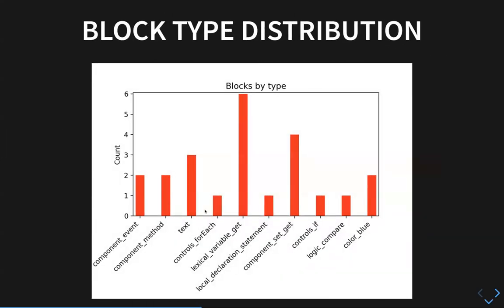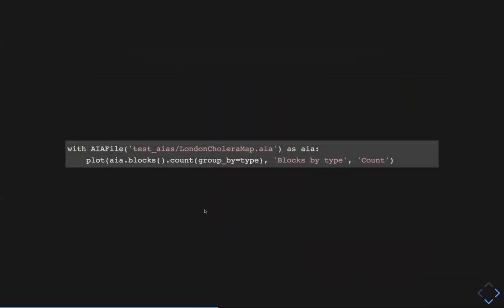A different type of question: maybe you want to look at the individual block type distribution rather than the category. So you're interested in the different types of blocks people are using. For the same app, you can see there are a couple of different component event and component method items, a bunch of lexical variable get blocks, and to a lesser extent component set/get. By changing one small attribute — grouping by type rather than category — you get a completely different analysis.